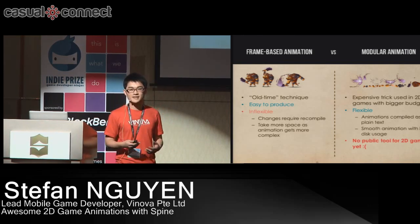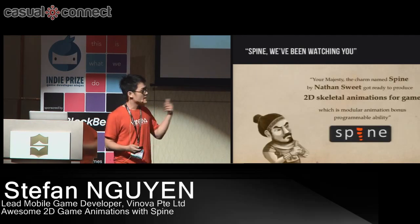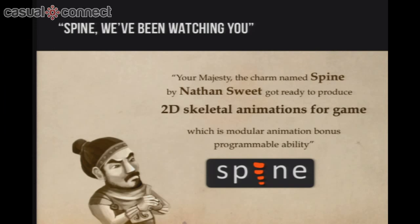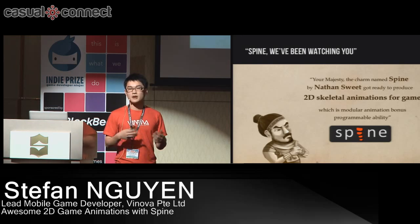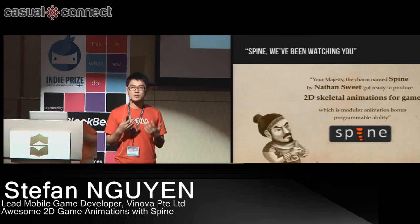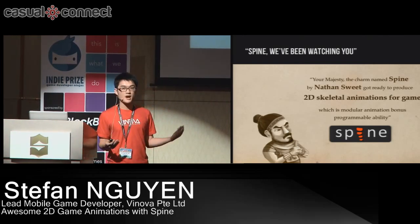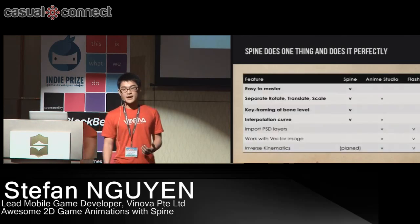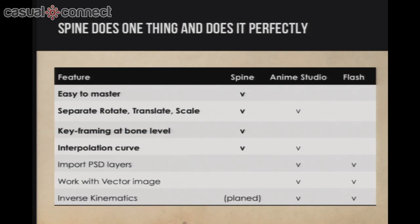Fortunately, a guy decided to change the situation. Nathan Sweet, who is also the author of LibGDX, the game framework, proposed a project called Spine on Kickstarter earlier this year, describing it as a 2D skeletal animation tool for games specifically. When we heard of the project, it seemed very promising and we loved it. We had been running Ultimate Arrow for several months, so we kept a close watch on this tool. When we encountered the problem I described, we looked back to Spine, and the project had gone really well.